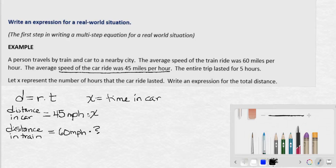We weren't told a variable to use for the train ride. And we generally don't want to use more than one variable, because remember, our goal is to eventually be able to set up equations to solve. We can only solve the equation if it has one variable.